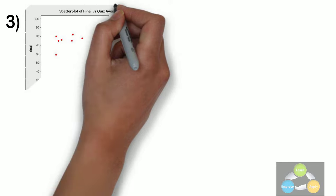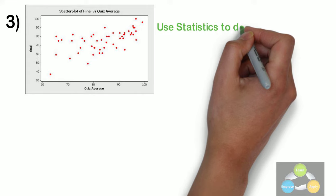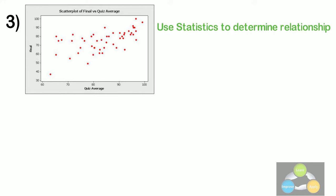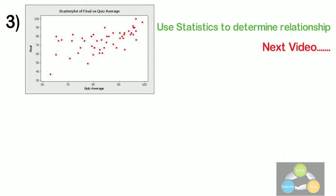If a line is not clear, statistics determine whether there is a reasonable certainty that a relationship exists. If the statistics say that no relationship exists, the pattern could have occurred by random chance. We can see this in detail in my next video.